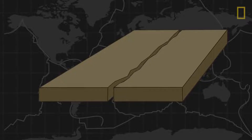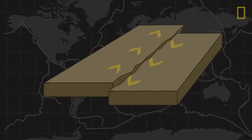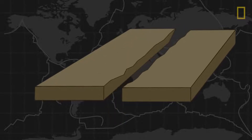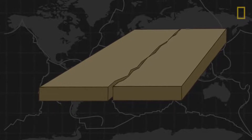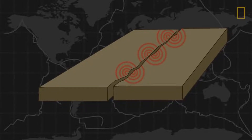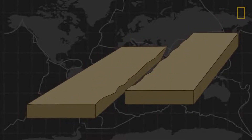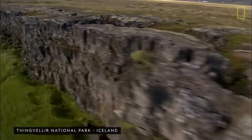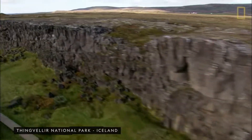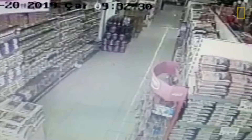Tectonic plates are constantly moving either against, away, along, or underneath each other. But sometimes their edges may catch and stick. The plates, however, continue to move, or at least attempt to. Energy from this attempted movement builds around the edge's sticking point, creating immense pressure until the edges are forced to let go and the plates slip. This causes a sudden and powerful release of energy, so powerful that it breaks the Earth's crust. This fracturing emits shockwaves through the ground and causes intense vibrations, or quakes.